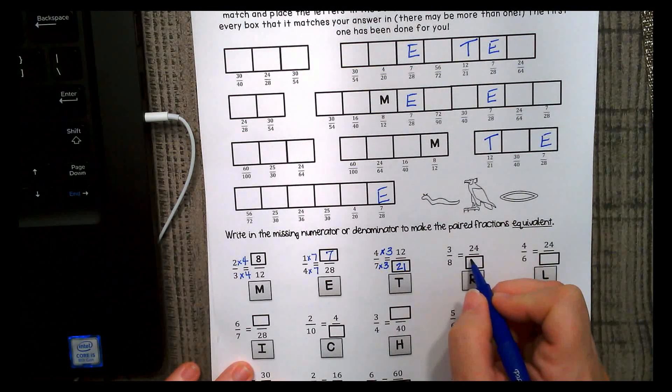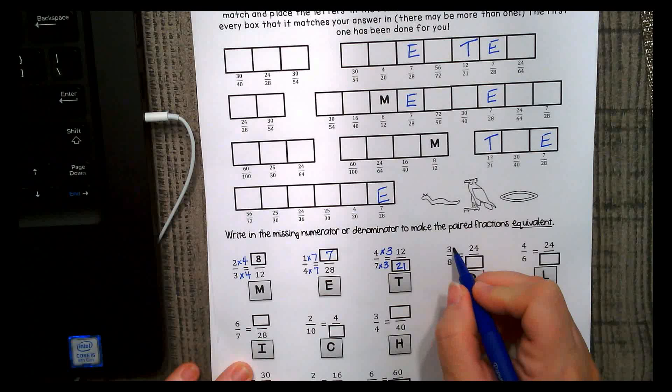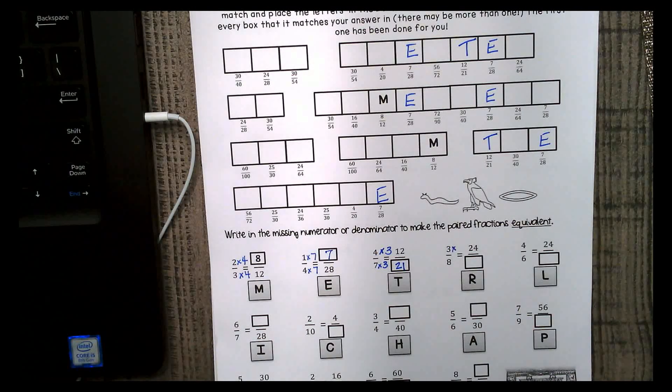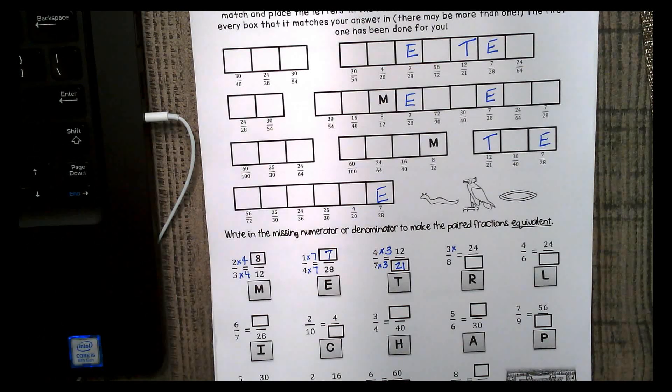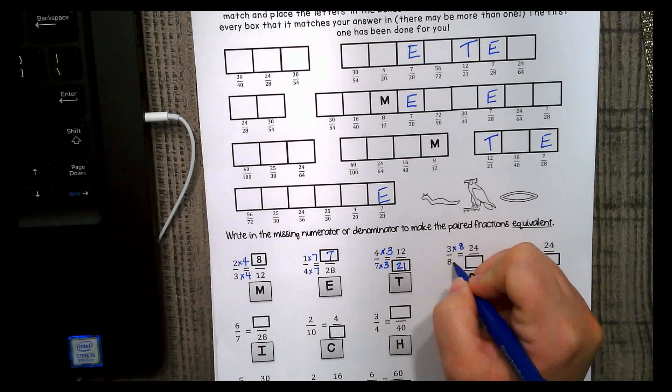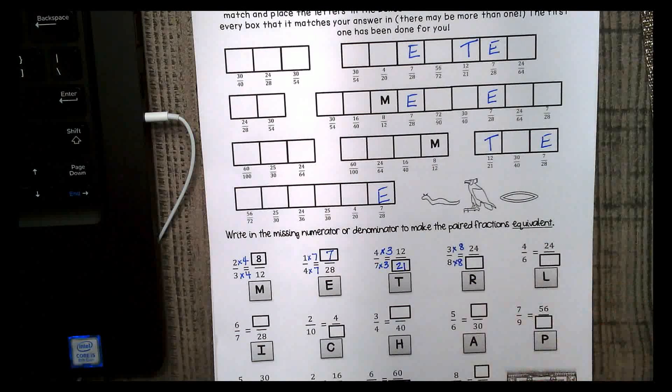Okay, take a minute and do the next one. Ask yourself, what times 3 is 24? Whatever that is, you do that to the bottom. We know 3 times 8 is 24. And so, we're going to do the same to the bottom.